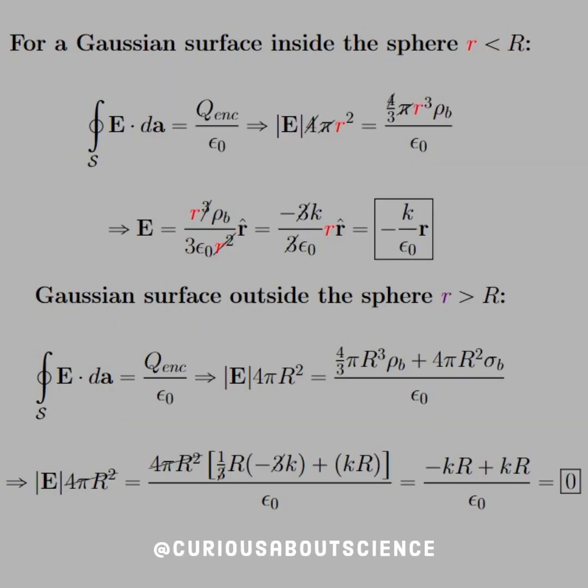For part b, where we're interested in the electric fields, we will use Gauss's law to determine that. For a Gaussian surface inside the sphere, where r is less than big R, the surface integral leads to E times the surface area of a sphere, which is 4 pi r squared. But on the right-hand side, for q enclosed, we have the volume times the volume bound charge. Now, with a little bit of algebra, we can solve for the electric field.